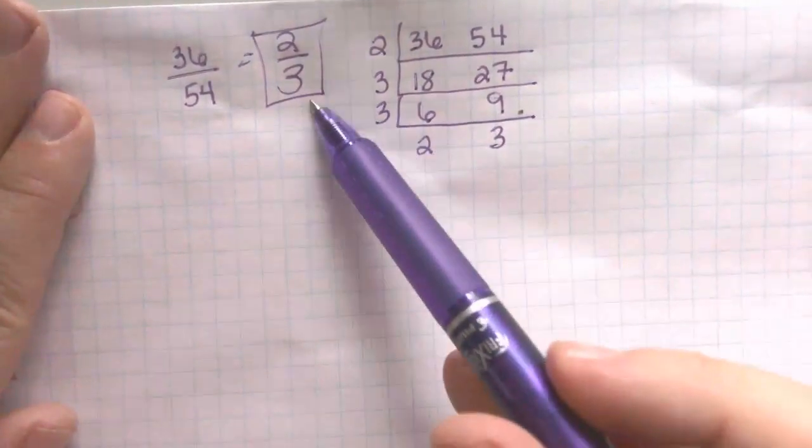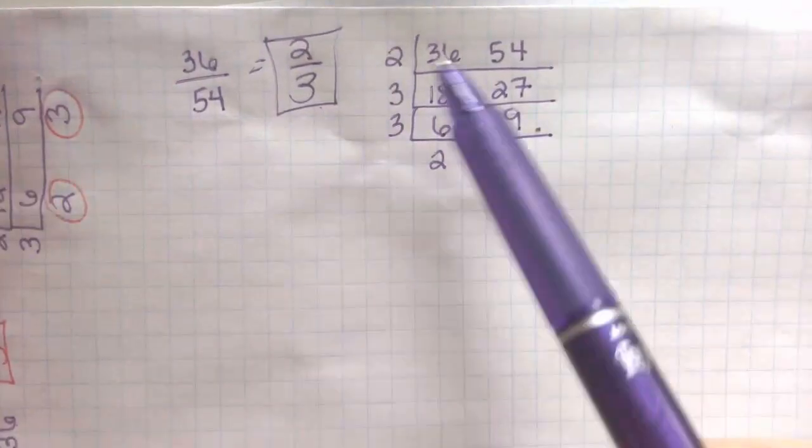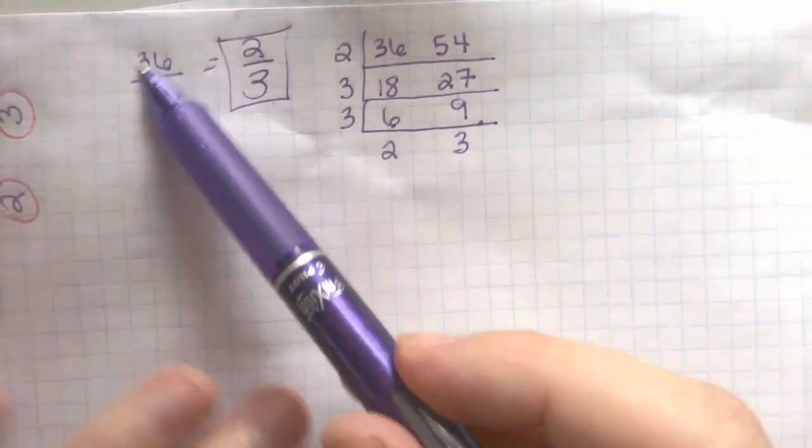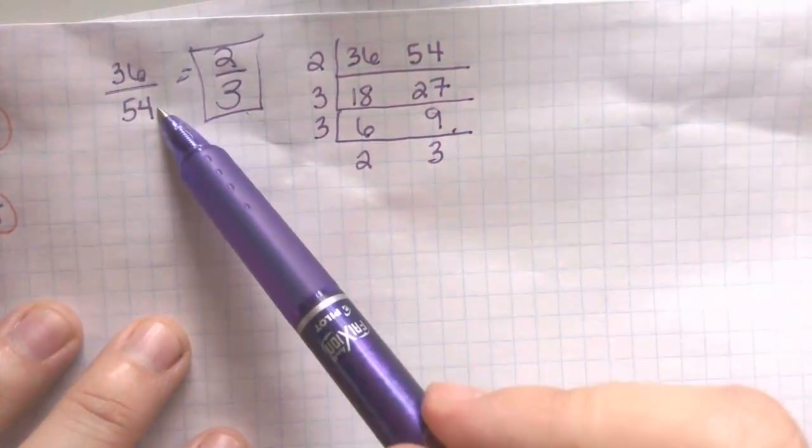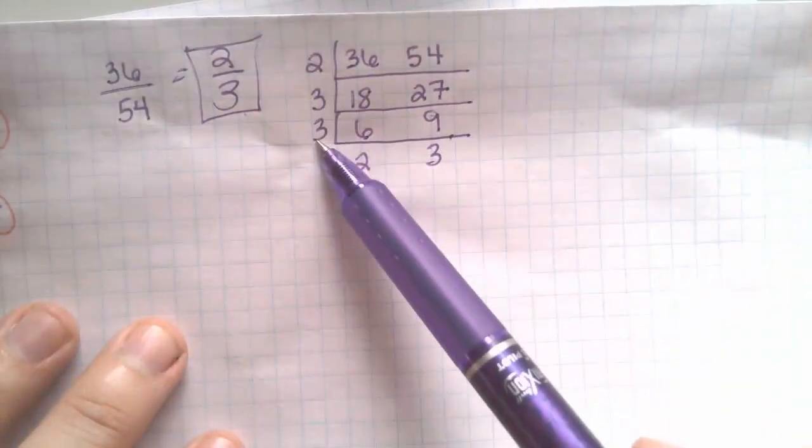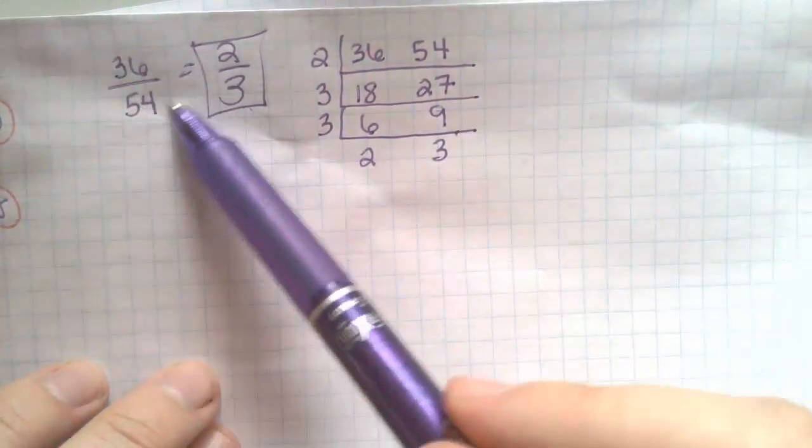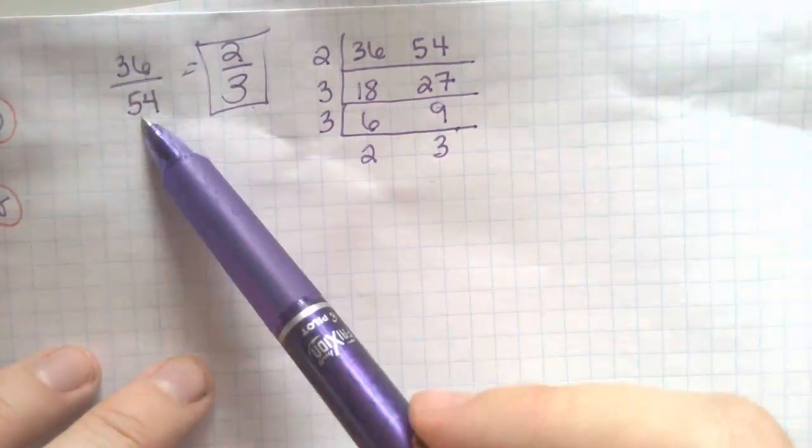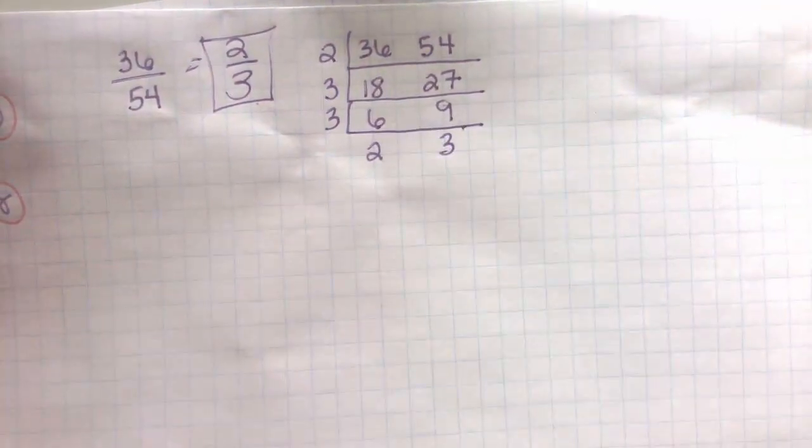So that is how you're going to go ahead and simplify fractions. So if they have a common factor, which 36 and 54 do, if they have a common factor, which is 18, that was their greatest common factor, we can simplify. But you can use the ladder method, too, if they're just too big.